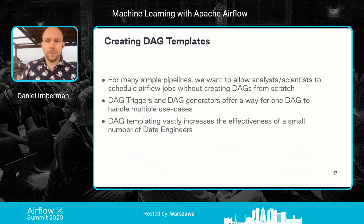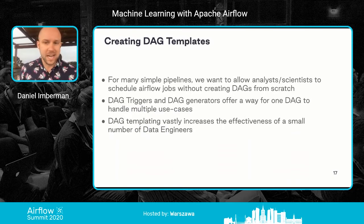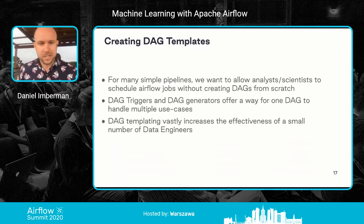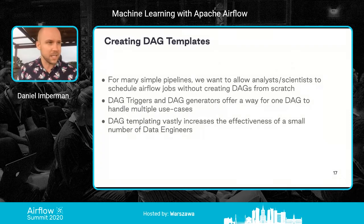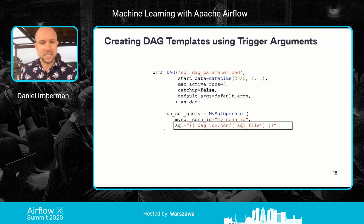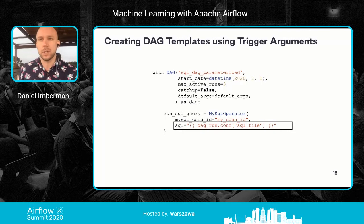When creating DAG templates, the reasoning is that for many simple pipelines we want to allow data analysts and scientists to schedule Airflow jobs without creating DAGs from scratch — especially for things like submitting a SQL statement. There's boilerplate code that doesn't need to be recreated every time. Airflow has something called DAGrun.conf: when you trigger a DAG, you can supply a JSON object and Airflow will use Jinja templating to inject those values, allowing you to point to different SQL files depending on the specific run.